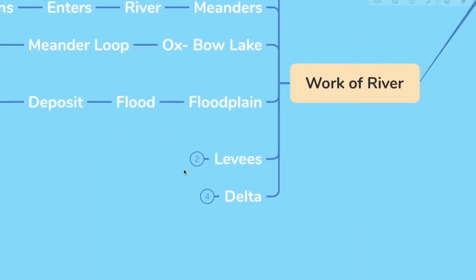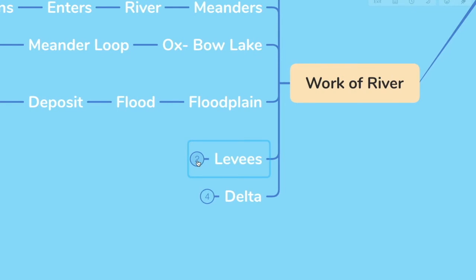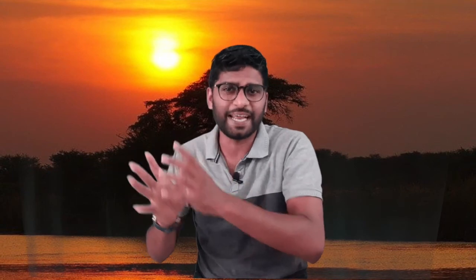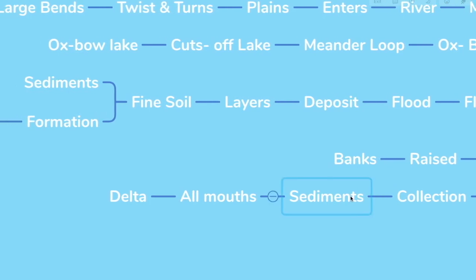Let's look at the next one, levees. The raised banks of a river are called levees. As the river approaches the sea, the speed of the flowing water decreases and the river begins to break into a number of streams known as distributaries. The river becomes slow, so it deposits its load and each distributary forms its own mouth. The collection of sediments from all the mouths forms a delta.